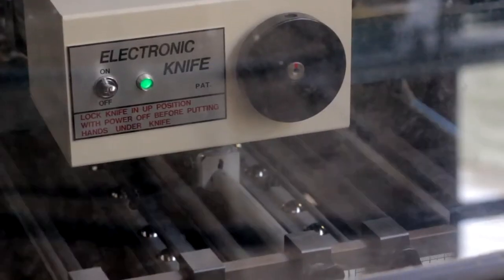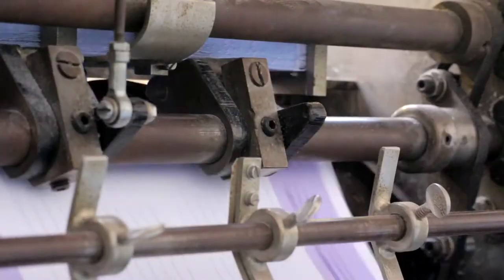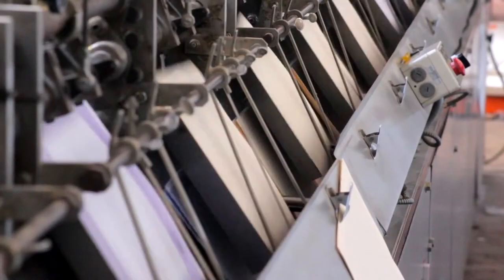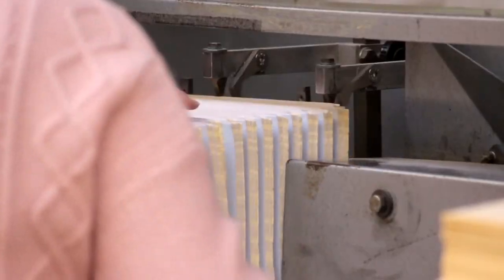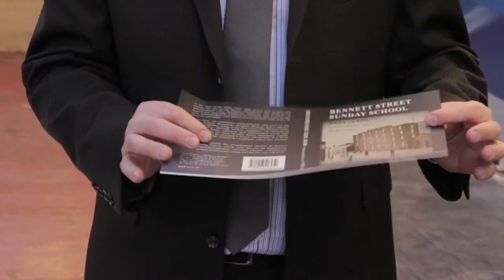Well as always it starts from a flat printed sheet which is folded and then collated to create a book block. We then need the cover which is printed and laminated and is oversized.